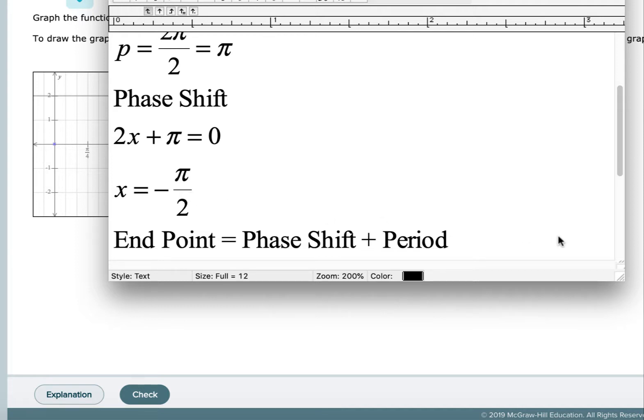The next thing we're going to do is find the endpoint. So we know it's going to start at negative π over 2, and I need to find where it's going to end. Normally it would start at the origin and we would add the period, but now what we're going to do is add the period to the phase shift.